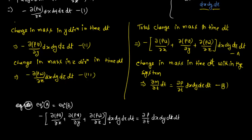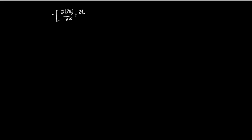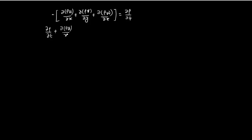Cancelling DX·DY·DZ·DT from both sides, the remaining terms give: −[(∂(ρU)/∂x) + (∂(ρV)/∂y) + (∂(ρW)/∂z)] = ∂ρ/∂t. Rearranging (moving all terms to one side, making them positive): ∂ρ/∂t + ∂(ρU)/∂x + ∂(ρV)/∂y + ∂(ρW)/∂z = 0.